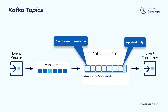Another key concept in Kafka is the topic. Think of a topic like a database table — it's a concept for organizing events of the same type together. When you publish events into Kafka, you need to specify which topic you want to publish to. Similarly, when you read events, you specify the set of topics you want to subscribe to or read from. All events published to a topic are immutable and append-only.